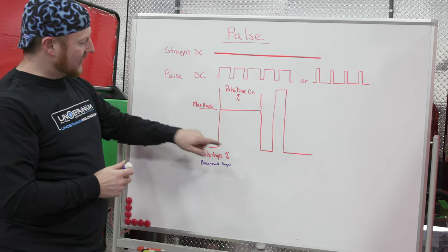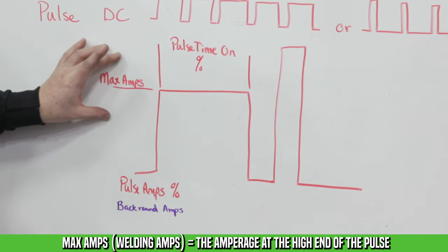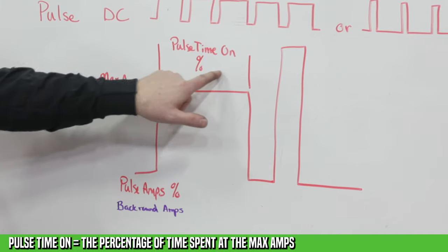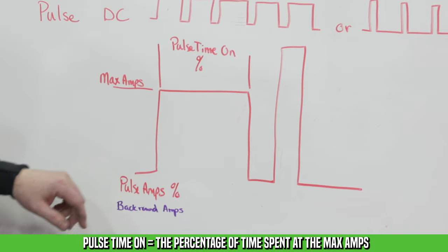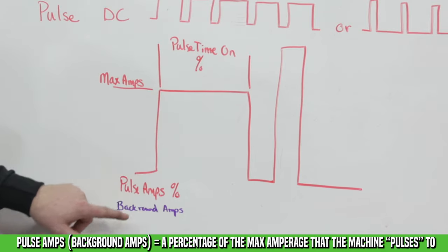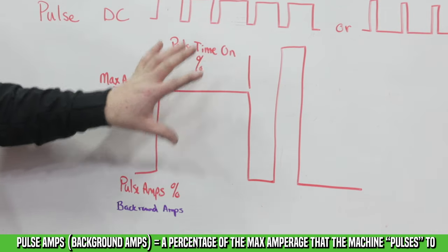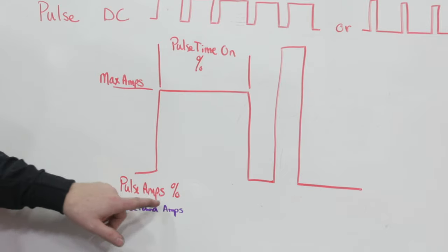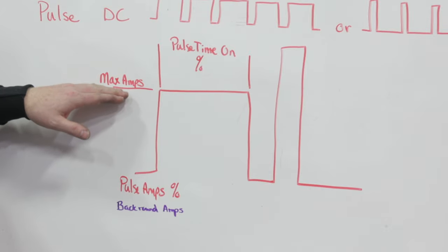So let's look at the actual pulse here. We set our max amps, so that's the amps that you actually set on the machine. That's the amplitude. Then you have your pulse time, so how much time are you going to spend at the max amperage? And then you have your pulse amps or your background amperage. So when it's not on the max amperage, what is it on? And you generally want that number pretty low.